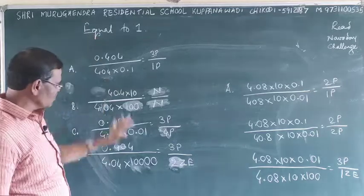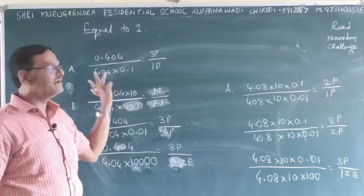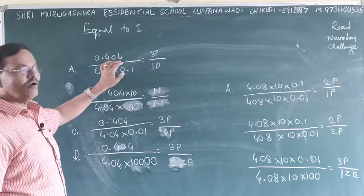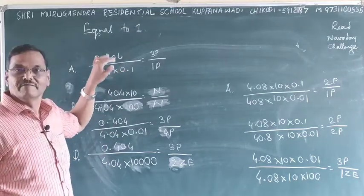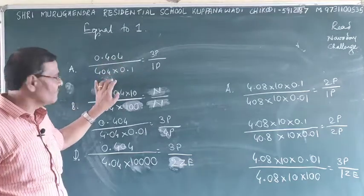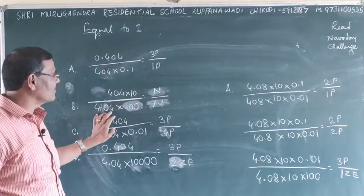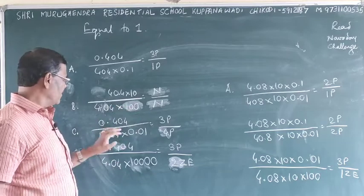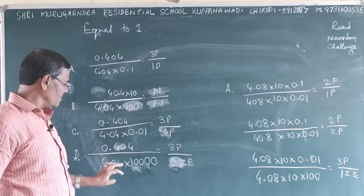I've written something different: 404 divided by 404. If we make it whole numbers, it's 404 divided by 404. These are all variations - 404, 404, 404.